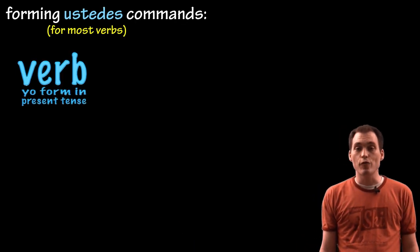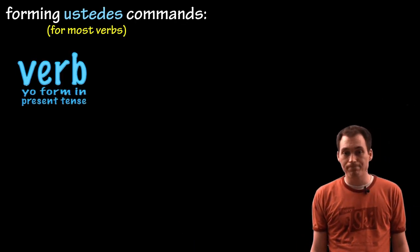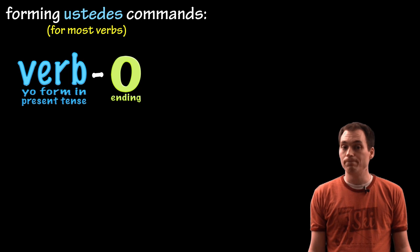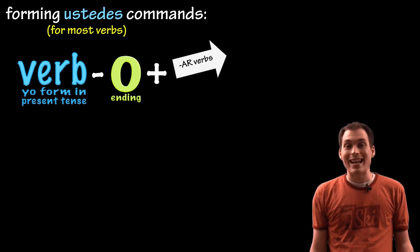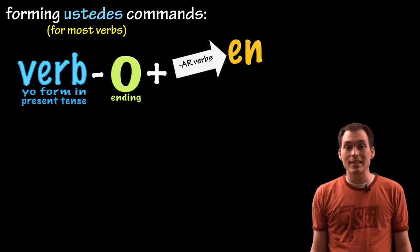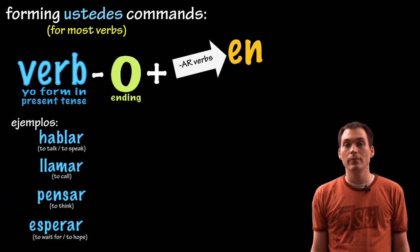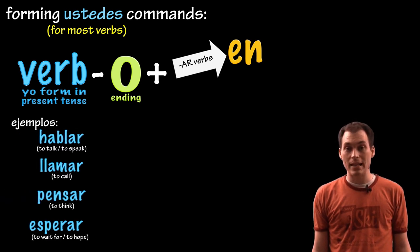So to form them, take the present tense forms of the verbs in the yo form, then take off the O. And for AR verbs, we'll add an EN to the end. Let's look at some examples. Hablar, llamar, pensar, and esperar.